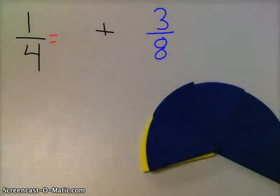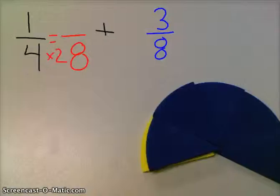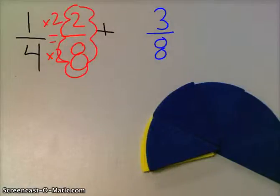So the one-fourth, if we change it to eighths, what's our rule? We're multiplying by times two. Very good. So let's do the same thing to the top. We're multiplying by two. Two. So one-fourth is equivalent to what? Two-eighths. Okay, good.